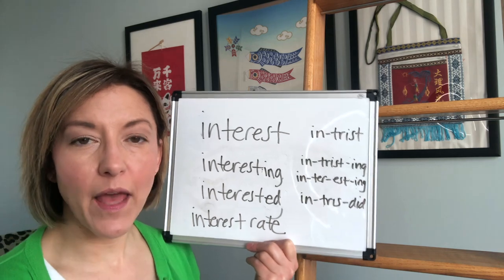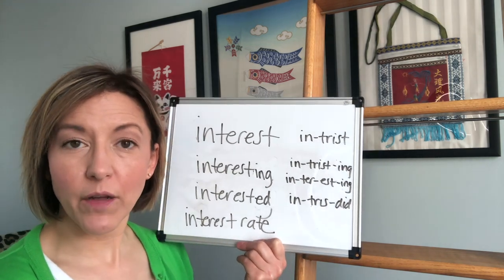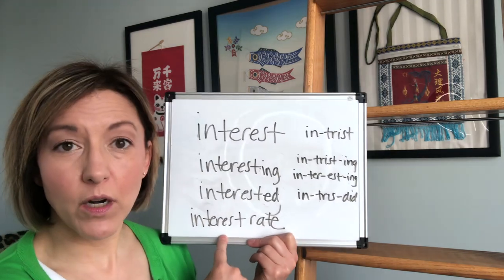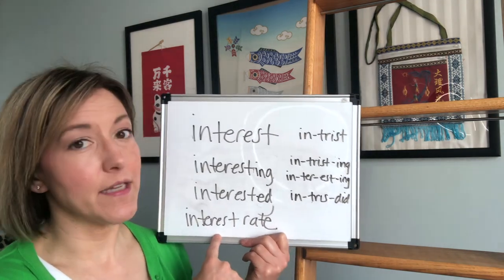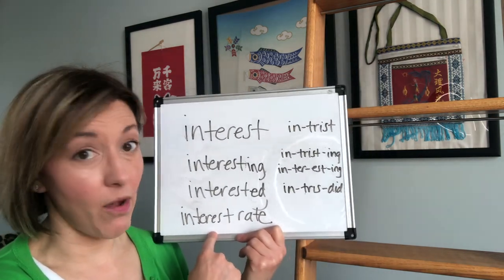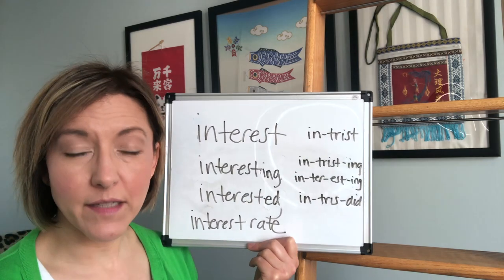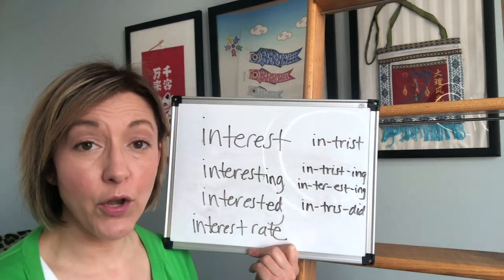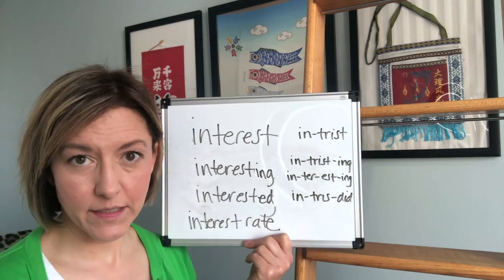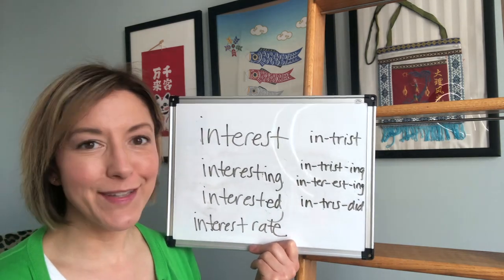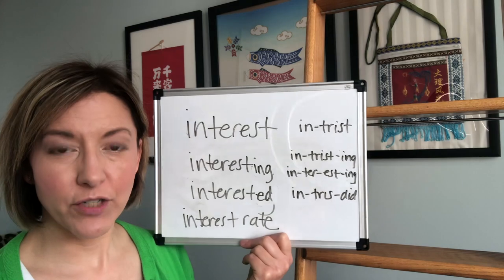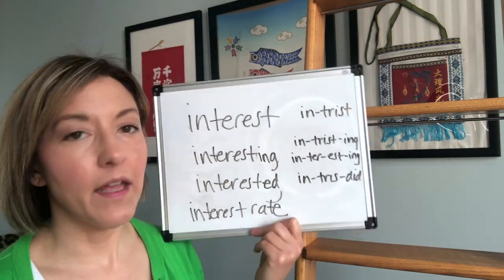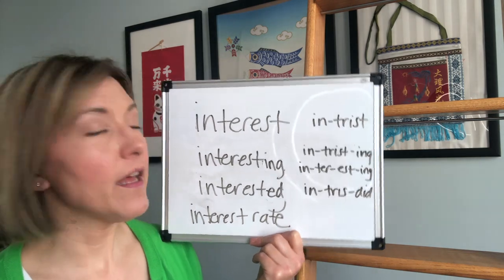Quick tip: if you're adding 'interest' to another word to make a compound noun, remember the first word is stressed — higher, louder, and longer vowel — and the second word is unstressed, shorter and lower, with the words linked together with no pause: 'interest rate, interest rate'. Let's try them all: interest, interesting, interested, interest rate.